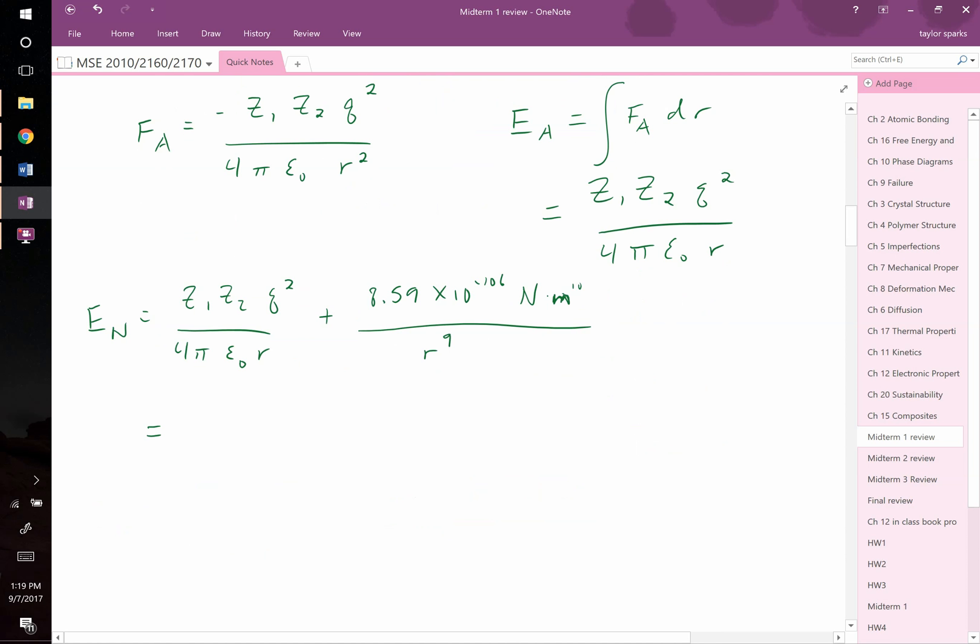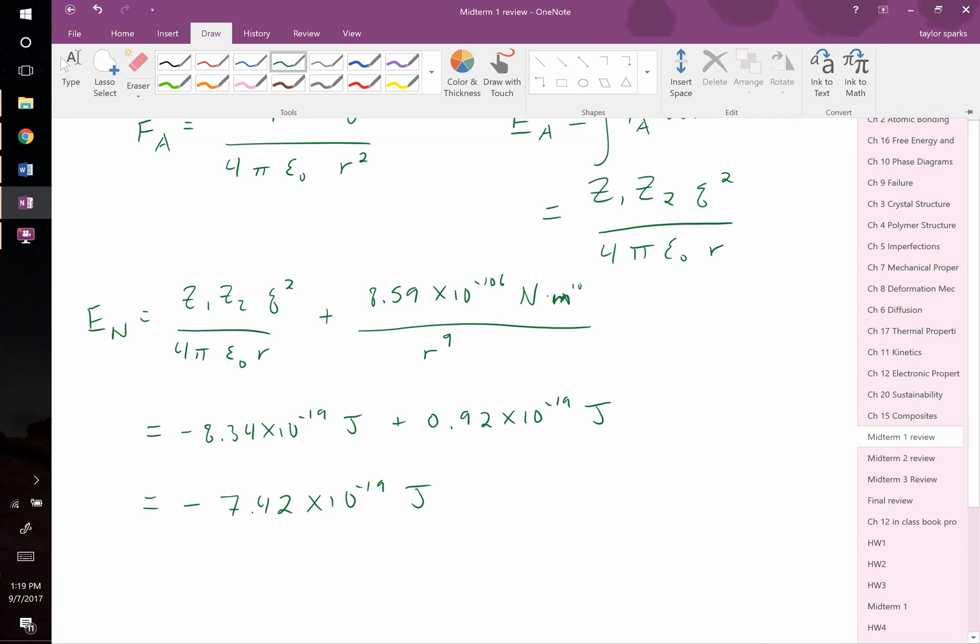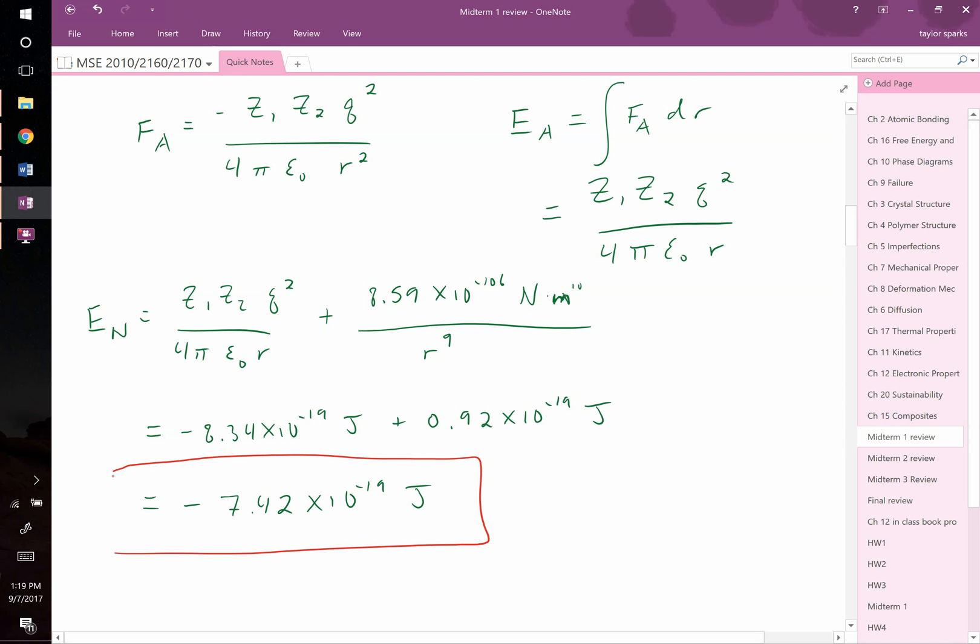We find that this is then equal to, so the two terms are equal to negative 8.34 times 10 to the negative 19th joules, plus 0.92 times 10 to the negative 19th joules. And combining those together, we finally find that the net energy is a negative 7.42 times 10 to the negative 19th joules. Or in other words, it's a negative value. This means that when these ions come together, the net energy change actually goes down, and when things go down in energy, that's spontaneous and favorable.